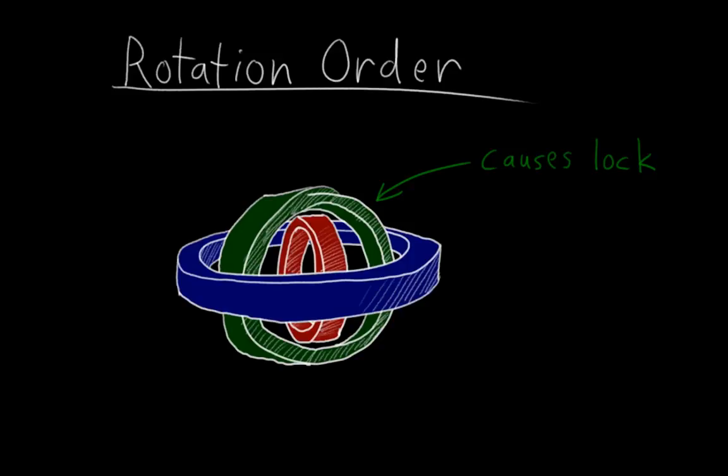Also, remember that I mentioned that the innermost ring stays aligned with the local axes of the object? Well, that means that if there's an axis that would be particularly convenient to stay aligned with the object's local space, you should probably make that the first axis.